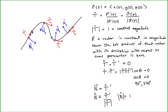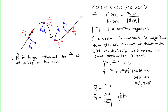So what can we say about the principal unit normal vector? First, the principal unit normal vector N is always orthogonal to our unit tangent vector at all points on the curve C. This is because the principal unit normal vector is defined based on the derivative of the unit tangent vector, and since the unit tangent vector has constant magnitude, its derivative is orthogonal to it. This means the unit tangent vector and the principal unit normal vector are always orthogonal to each other.